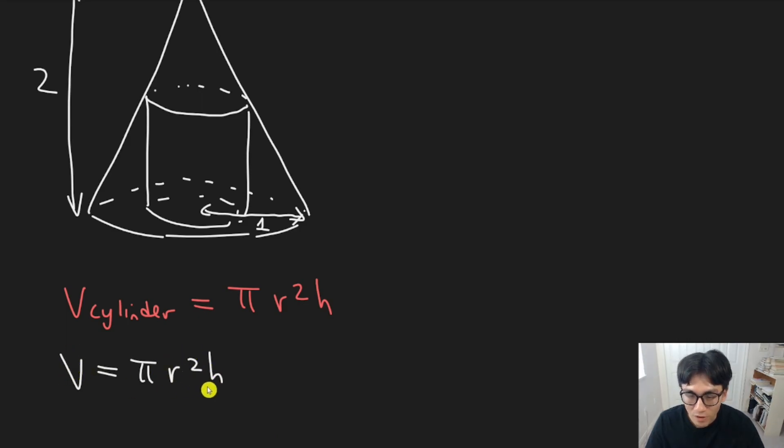The thing is, volume we want in terms of only one variable, either r or h, but not both. And so we're going to need another equation to help us eliminate one of the variables.